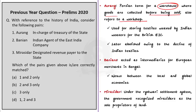Now look at the second pair: Bunyans acted as intermediaries for European merchants in Bengal, remaining as a nexus between local and global economies facilitating bi-directional transfer of knowledge. So the second pair is correctly matched. Now look at the third pair: Mirasdar is related to the Rayatwari system. Under the Rayatwari settlement, the government recognized Mirasdar as the sole proprietors of land and tenants' rights were completely extinguished. Hence the third pair is also correct. The correct option is option B.